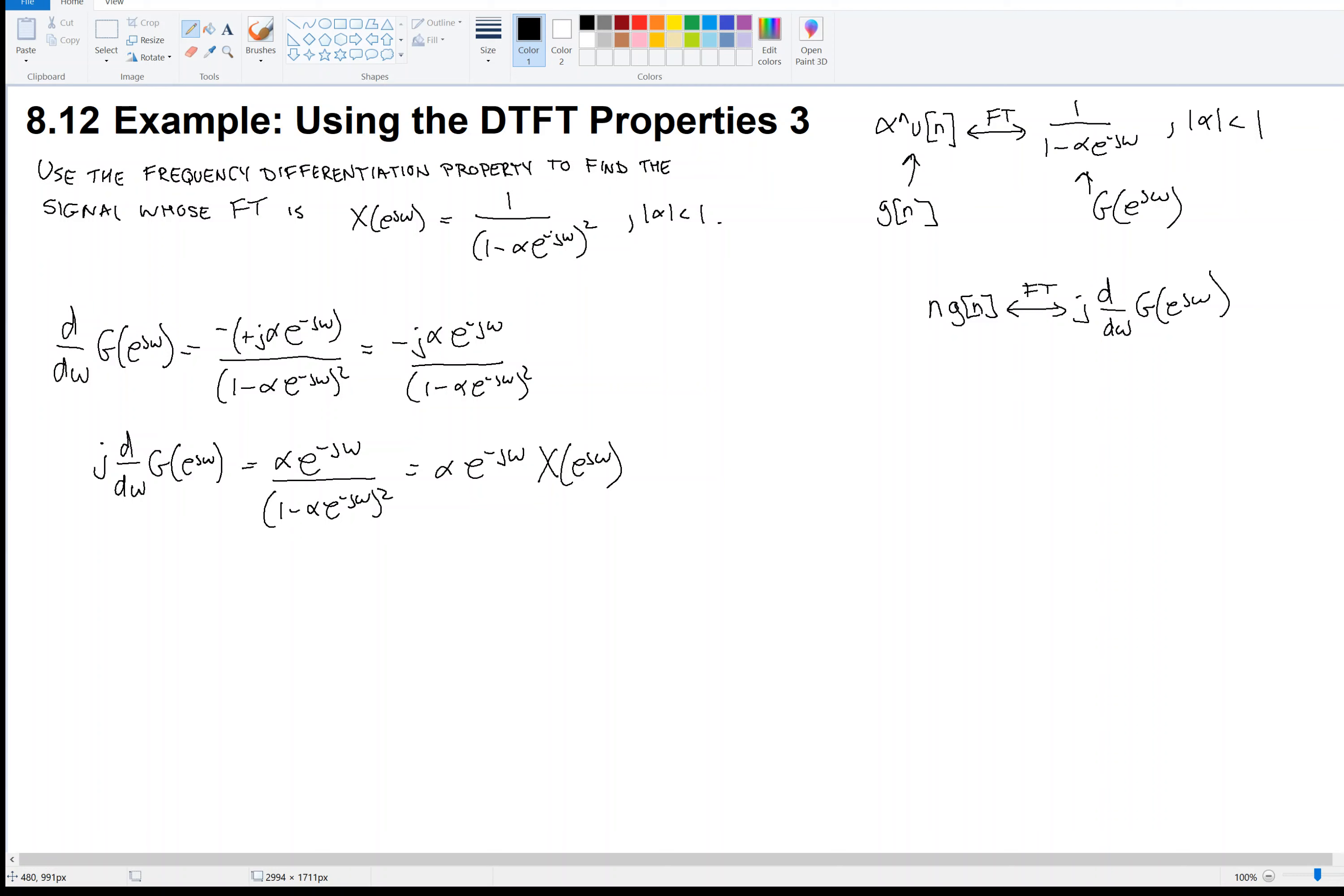Now let's take the inverse Fourier transform of this thing. When I take the inverse Fourier transform of the left, according to the frequency differentiation property, the inverse Fourier transform is n·g[n]. On the right, when I take the inverse transform, I get alpha times lowercase x. But then, what does e^(-jω) do in time?